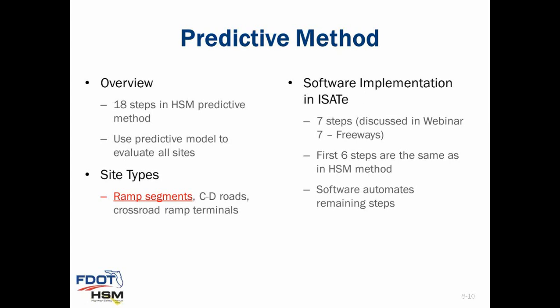In the ramps chapter, a site is considered to be a ramp segment, a collector-distributor road segment, or a crossroad ramp terminal. In the interest of time, we will focus on ramp segments. The software implementing the method also follows the 18-step process. The first six steps consist of data assembly activities completed by the analyst, and step seven initiates the calculation process, which is automated in the software along with all remaining steps. We've discussed these steps in a previous webinar, so today we'll focus on other ramp safety topics.